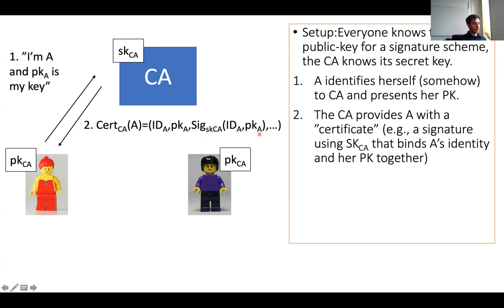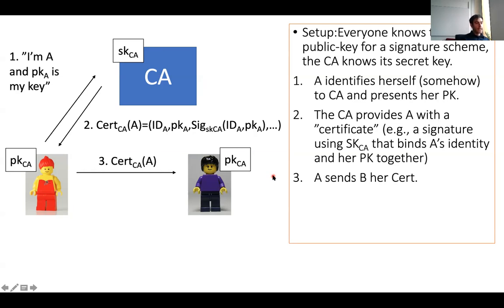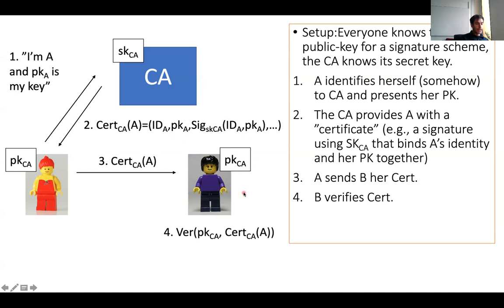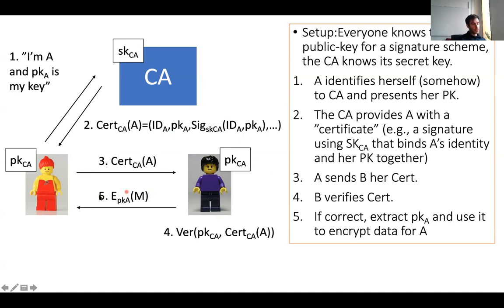Now Alice has this certificate, and the nice thing is that she can send it to Bob. Since Bob has the CA's public key, he can verify the signature — remember that signature schemes are verified using the public key of the signer. If the signature is authentic, Bob learns Alice's public key and can use it to communicate with Alice, for instance to send an encrypted message to Alice under that public key.